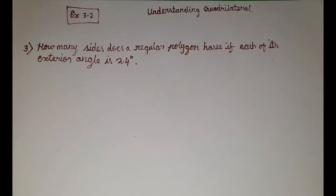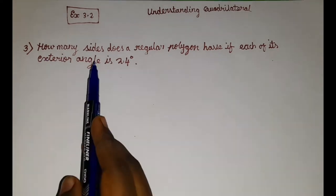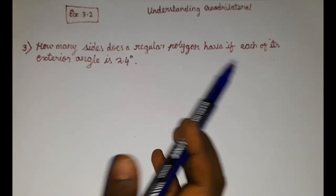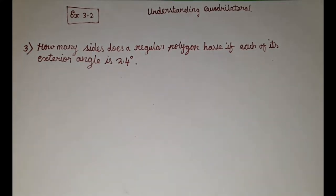So guys, let's read the question. How many sides does a regular polygon have if each of its exterior angle is 24 degrees?